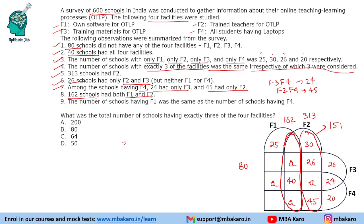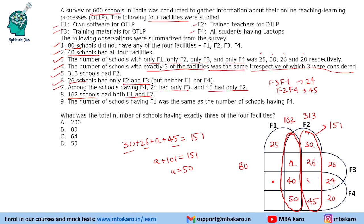So we get: 30 + 26 + A + 45 = 151, which gives 101 + A = 151, so A = 50. We can now place 50 in all the exactly-3-facilities regions: all five such intersections become 50.